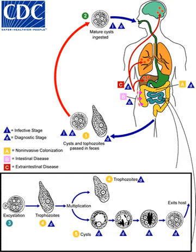Amoebiasis can be present with no, mild, or severe symptoms. Symptoms may include abdominal pain, diarrhea, or bloody diarrhea. Complications can include inflammation and ulceration of the colon with tissue death or perforation, which may result in peritonitis. People affected may develop anemia due to loss of blood.